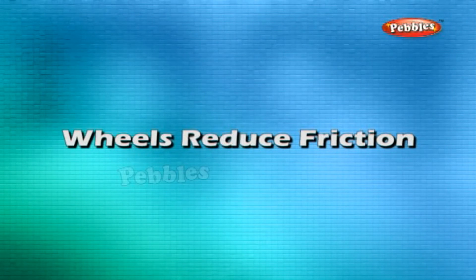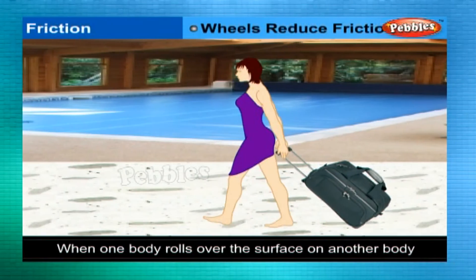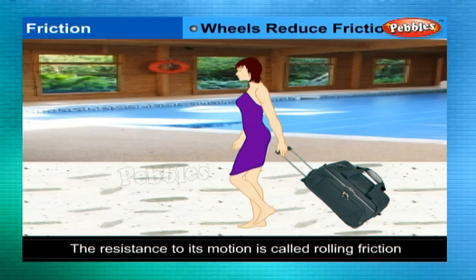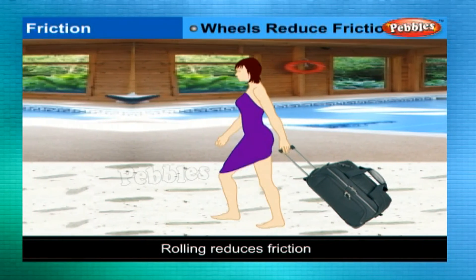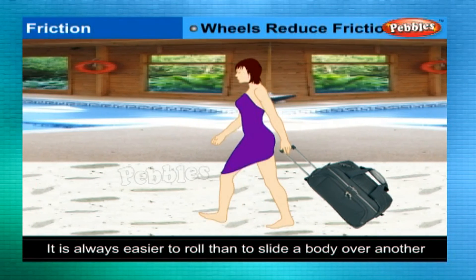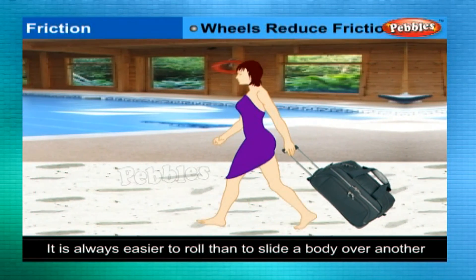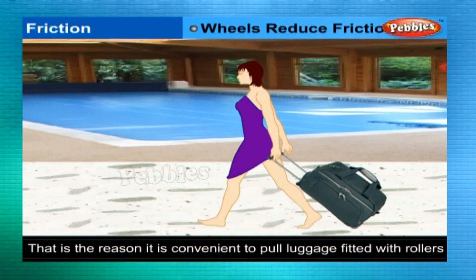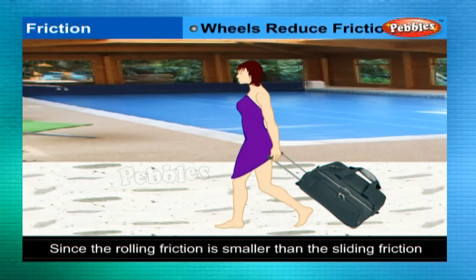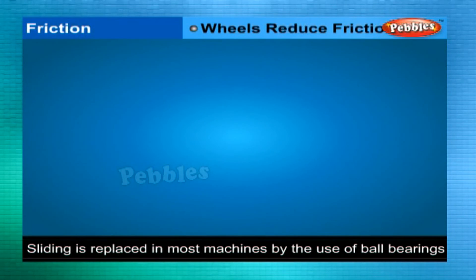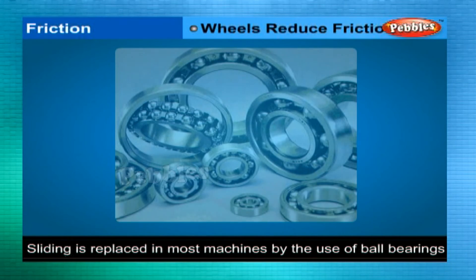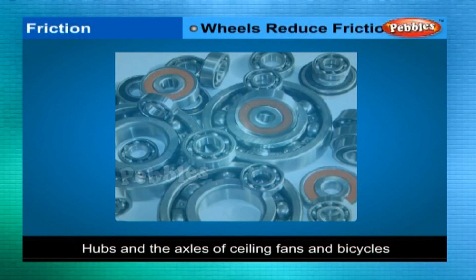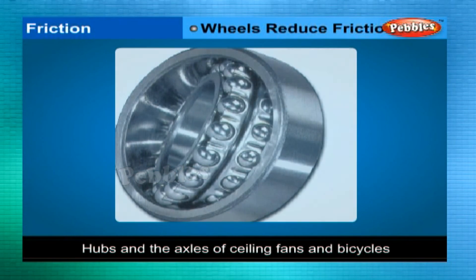Wheels reduce friction. When one body rolls over the surface of another body, the resistance to its motion is called rolling friction. Rolling reduces friction — it is always easier to roll than to slide a body over another. That is the reason it is convenient to pull luggage fitted with rollers. Since rolling friction is smaller than sliding friction, sliding is replaced in most machines by rolling through the use of ball bearings, such as between the hubs and axles of ceiling fans and bicycles.